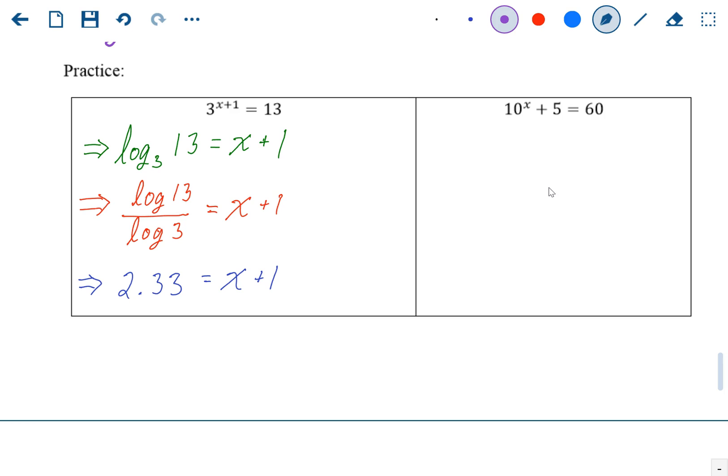So finally, to solve for x, we're going to subtract one on both sides. So that means 1.33 is going to be x. Again, you check that by plugging it back into the original problem for x.